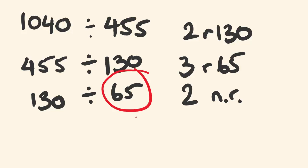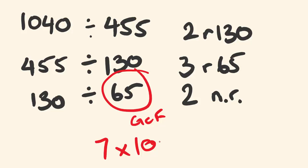65 is our GCF. So 455 divided by 65 is 7, then multiply by 1040 — the LCM is 7,280.